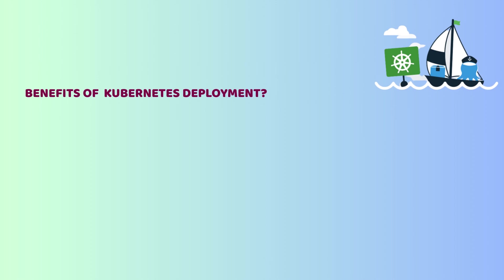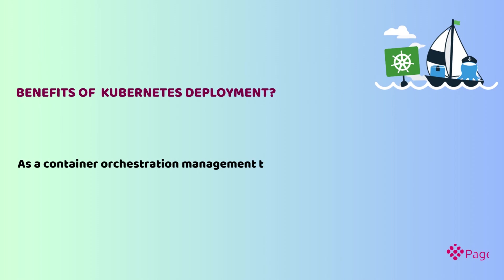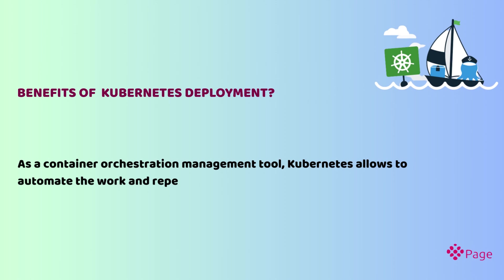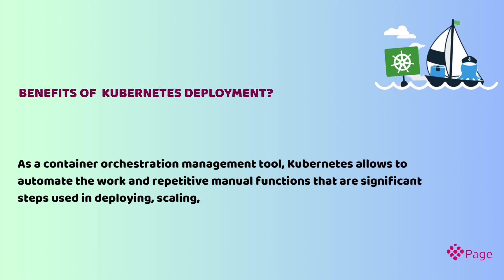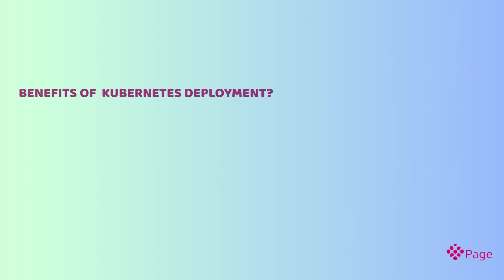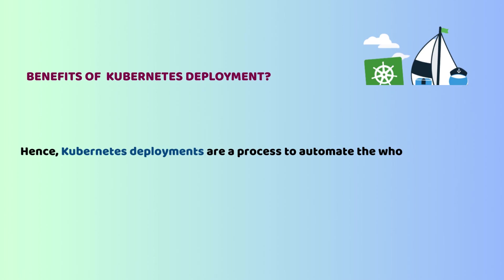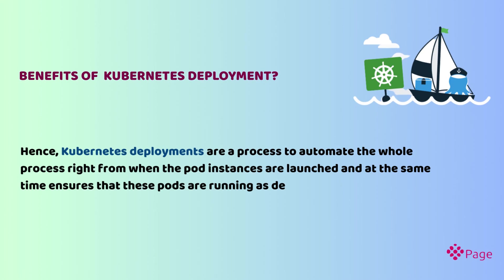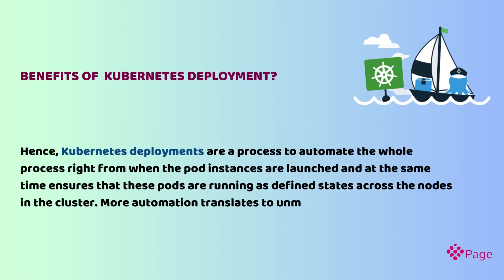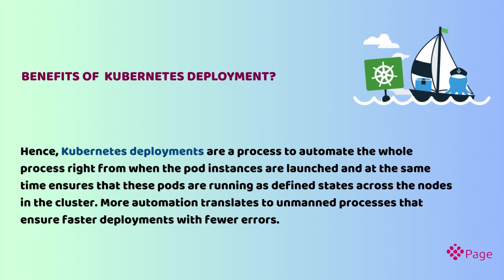As a container orchestration management tool, Kubernetes allows automating the work and repetitive manual functions that are significant steps used in deploying, scaling, and updating applications in production. Kubernetes deployments automate the whole process right from when the pod instances are launched, and at the same time ensures that these pods are running as defined states across the nodes in the cluster. More automation translates to unmanned processes that ensure faster deployments with fewer errors.